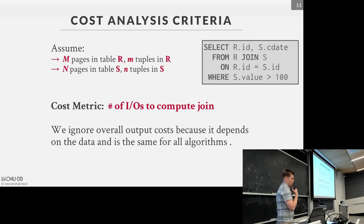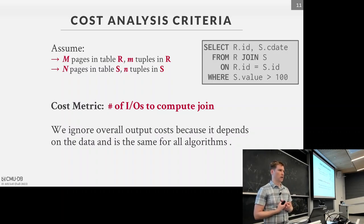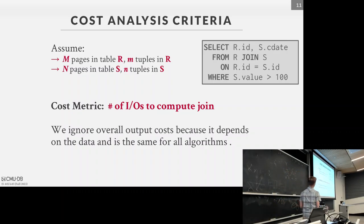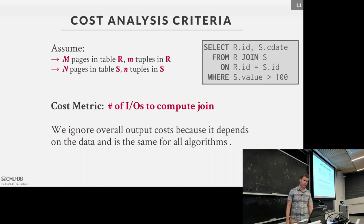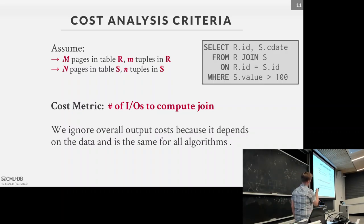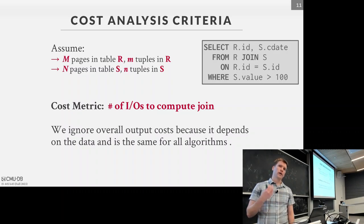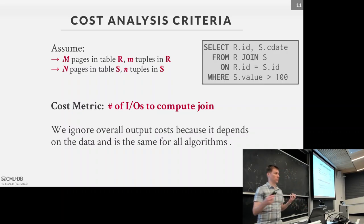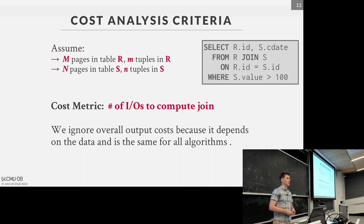When thinking about design decisions for joins, we mostly focus on the cost of I/O, not compute. We say table R has M pages with m tuples, and table S has N pages with n tuples. We'll cost these algorithms in terms of M and N pages and m and n tuples throughout the lecture. I/O is still the high pole in the tent for most disk-based systems, unless you're doing an in-memory database where you might make different design decisions.